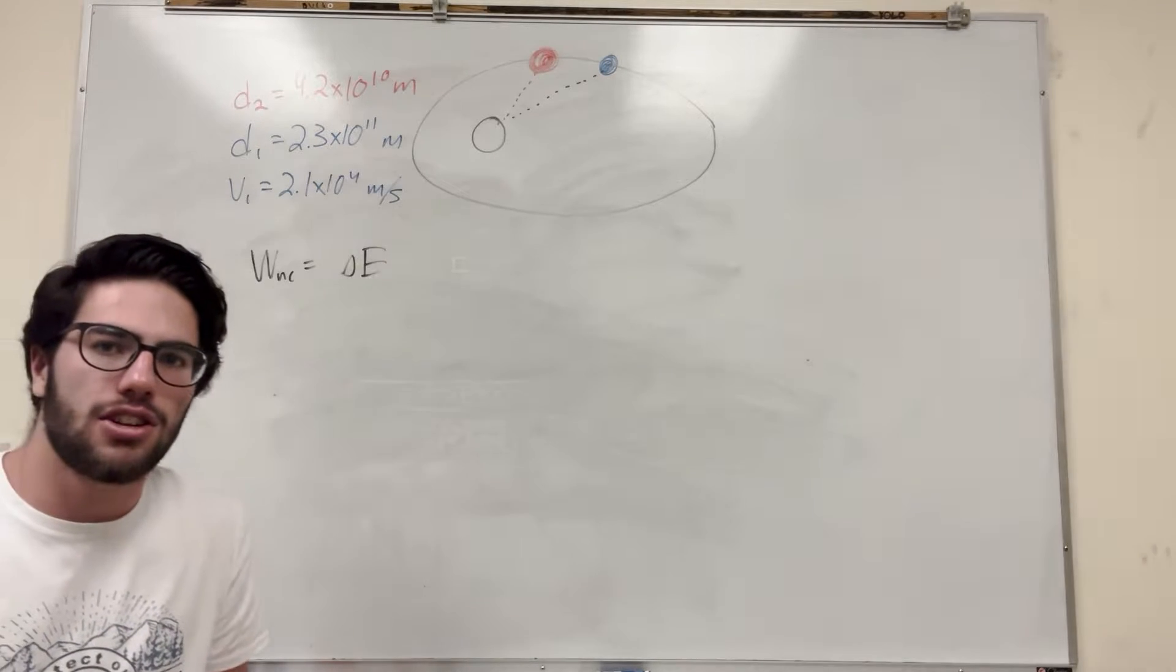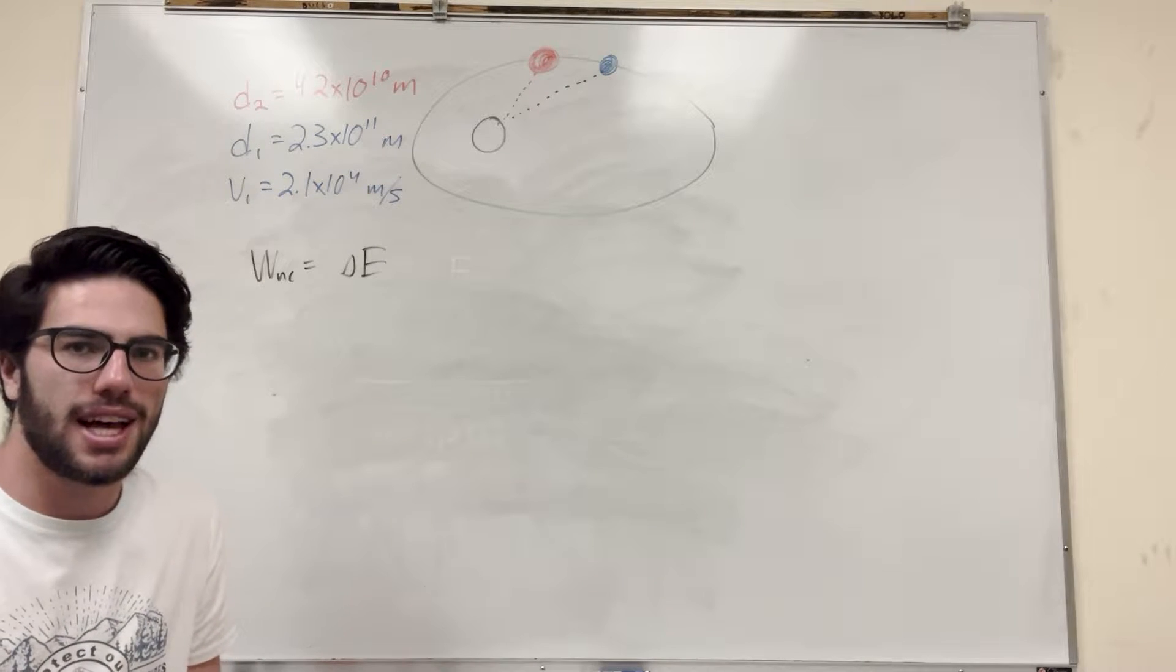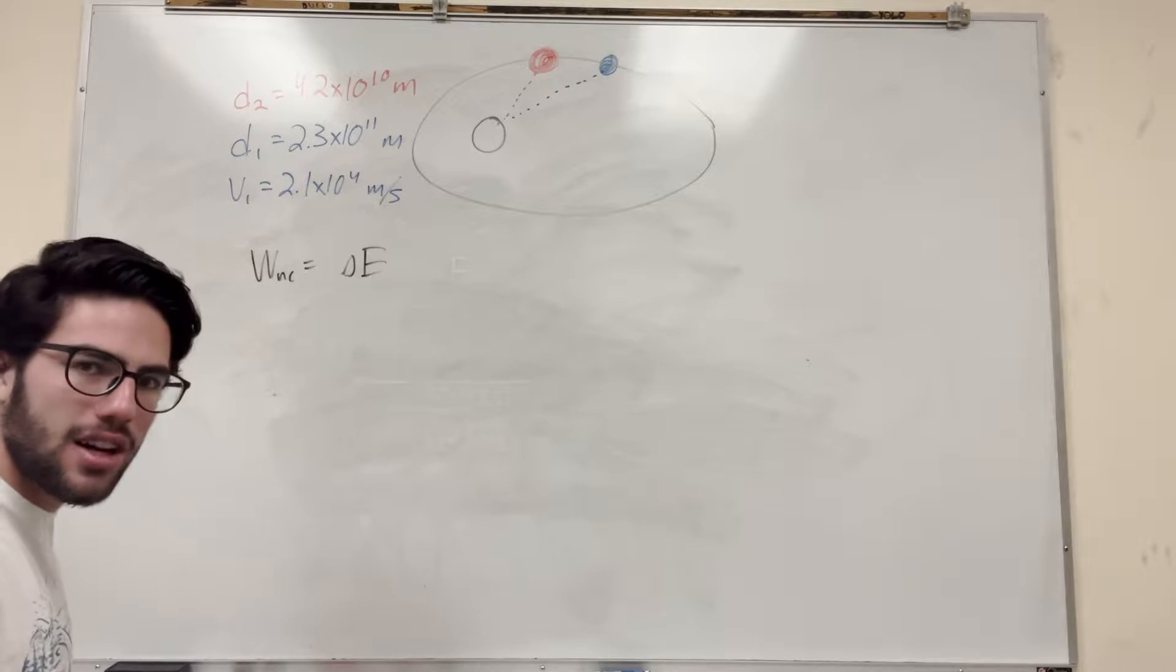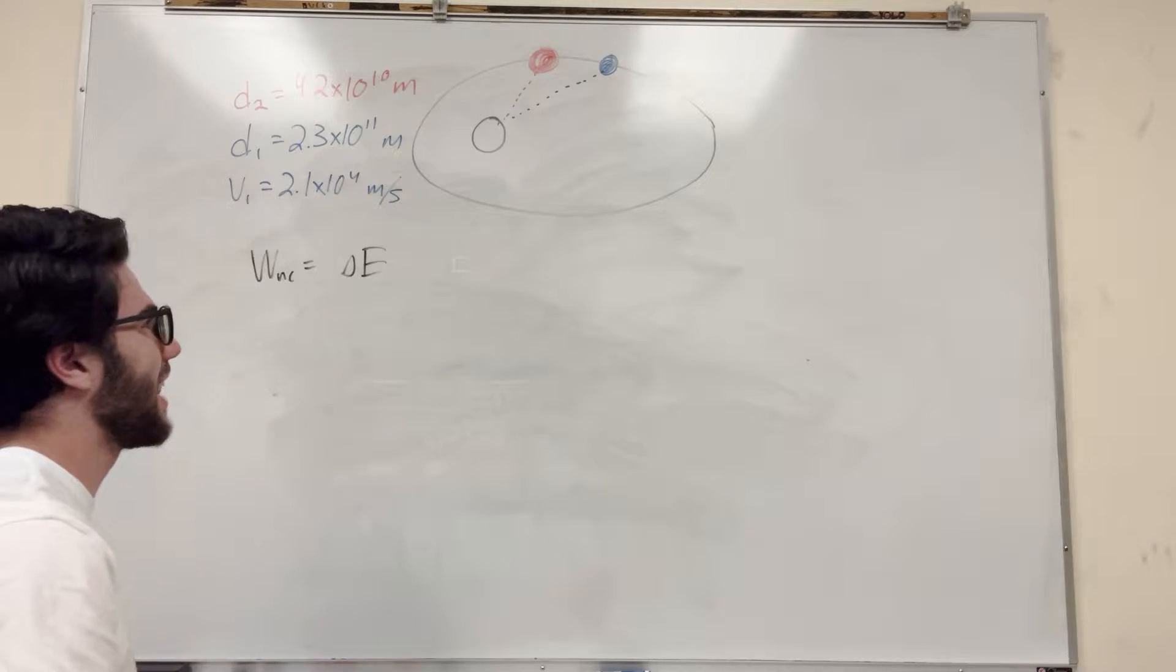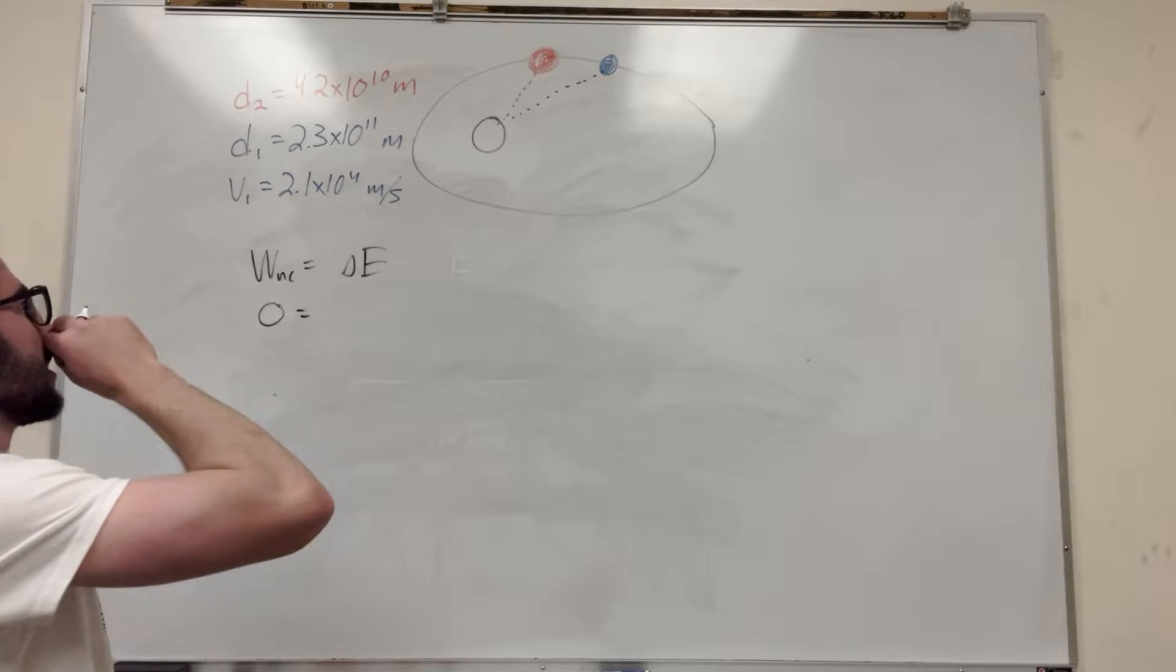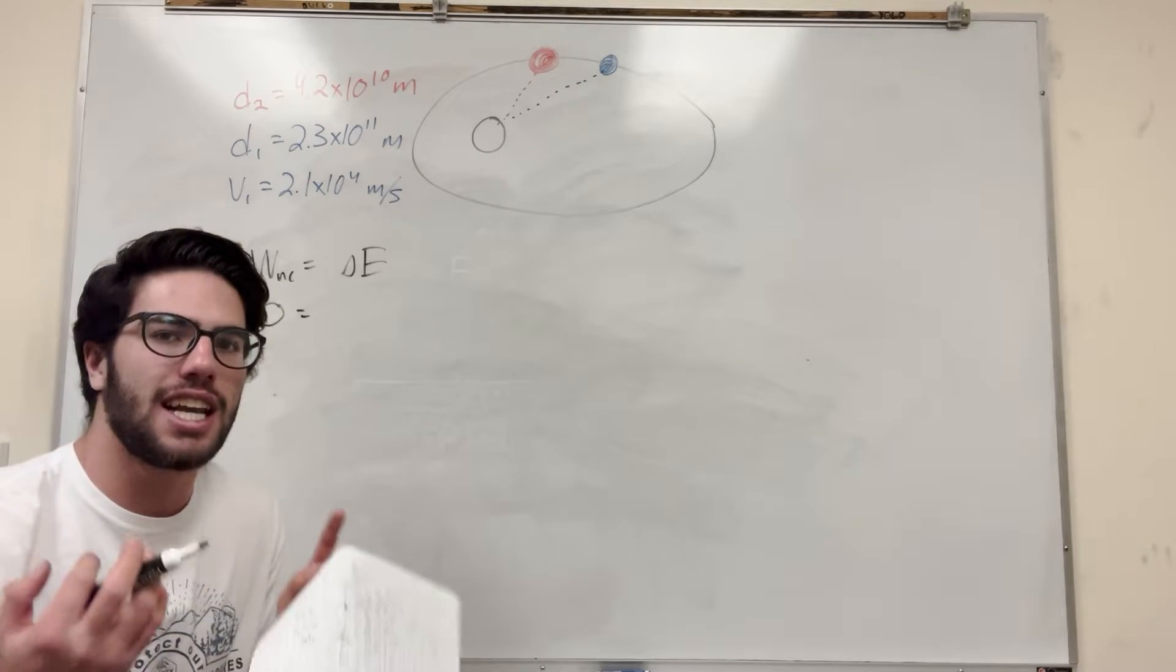So work non-conservative, that's kind of like air resistance or friction. That's something that we're not going to be looking at in this system here. Because it's a closed system, right? There's no friction, there's no one pushing on the planets. So we're going to take this to be zero. So then we're just looking at change in energy. So we need to think about what our changes in energy are going to be.